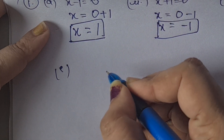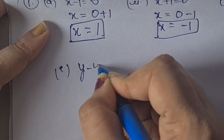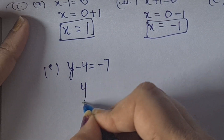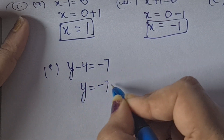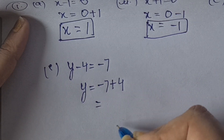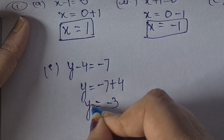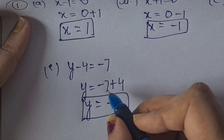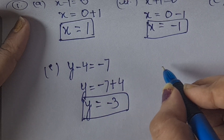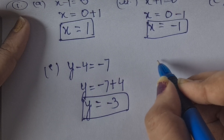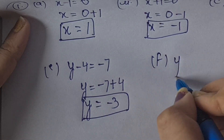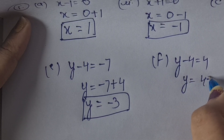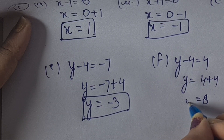E part: y minus 4 = minus 7. So y = minus 7 + 4 = minus 3. The sign is minus because 7 is greater than 4 — we use the sign of the greater number. F part: y minus 4 = 4. So y = 4 + 4 = 8.